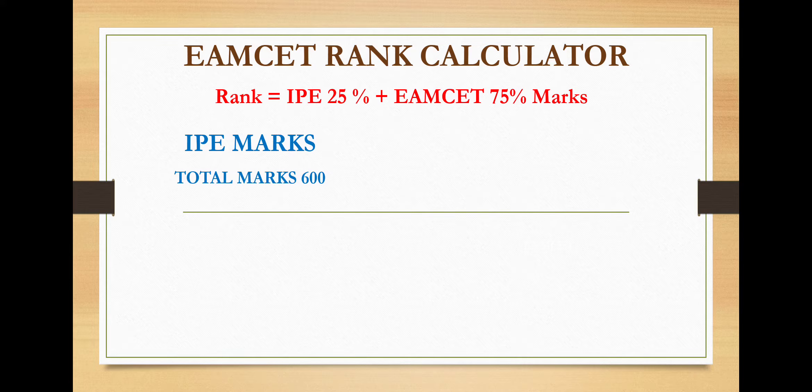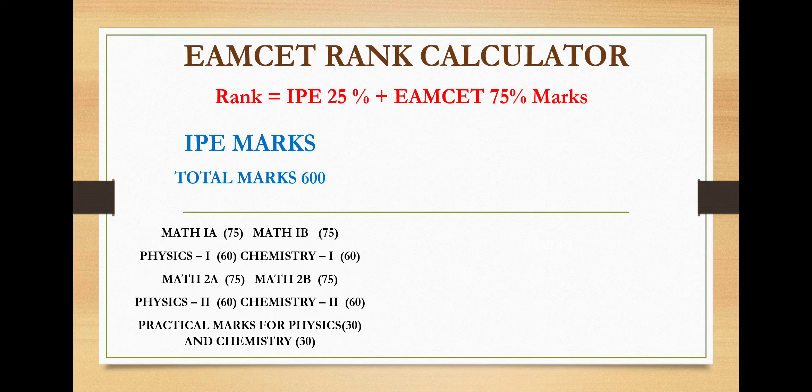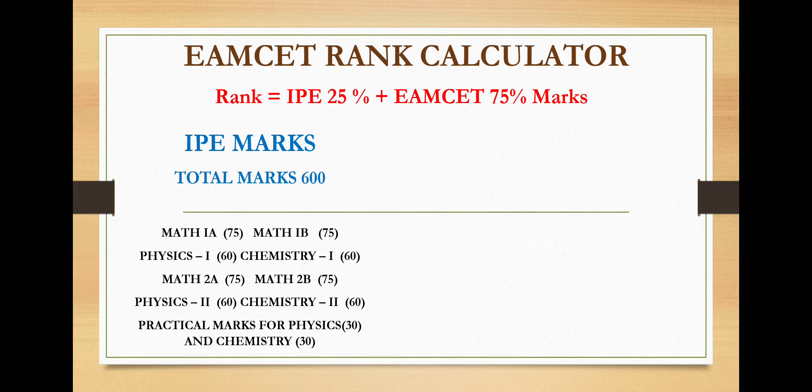We know that in IPE total marks of the subjects are 600. The marks of various subjects in IPE are mathematics 1A is 75, 1B is 75, physics and chemistry 60 and 60, 2A and 2B are 75 marks each, physics second and chemistry second 60 and 60 marks, and practical marks for both physics and chemistry is 30 and 30.